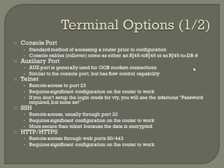The auxiliary port — the AUX port — is generally used for out-of-band modem connections. It's similar to the console port but has flow control capability. Not all Cisco routers have an auxiliary port; in fact, this one right here doesn't. If a router does have an AUX port, it will usually be right next to the console port and labeled AUX so you don't confuse the two.